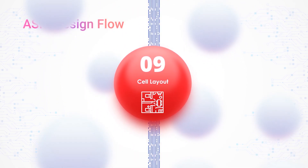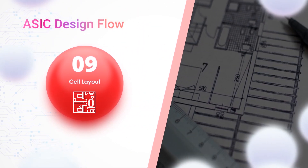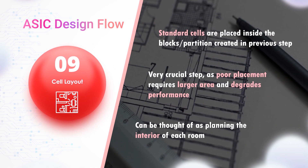Cell Placement: In this process, standard cells are placed inside the blocks created in the previous step. It is a very crucial step, as poor placement requires a larger area and degrades performance. It can be thought of as planning the interior of a room, with more focus given to the efficient packing of commodities within the room.